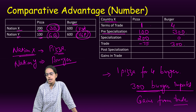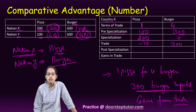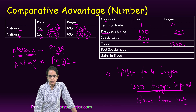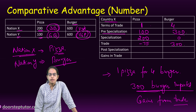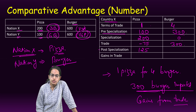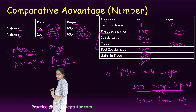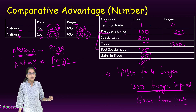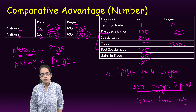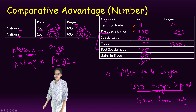Country X is importing 300 burgers. Now if 300 burgers are being imported and 1 pizza equals 4 burgers, the trade in pizzas would be minus 75, because 300 divided by 4 is 75, and it's negative since burgers are being imported. So post-specialization pizza would be 200 plus minus 75, which gives 125. The gains from trade equals post-specialization minus pre-specialization: 125 minus 100, giving gains from trade of 25.